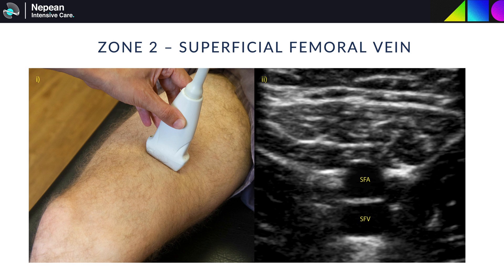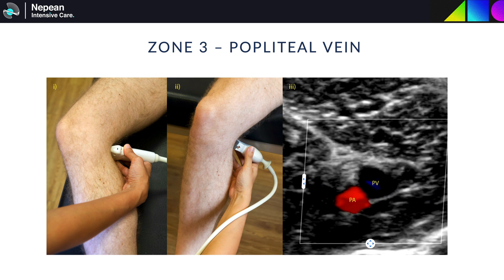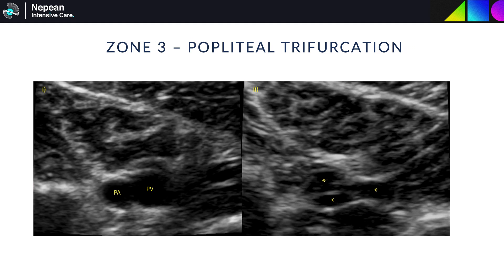Sliding the transducer down shows the bifurcation of the femoral vein. The superficial vein should then be followed into the adductor canal until it's no longer visible. In the adductor canal, the femur does not underlie the vessels, so the non-scanning hand may need to be held underneath the medial aspect of the thigh to allow compression. Lastly, the popliteal vein should be seen superficially to the popliteal artery in the popliteal fossa, followed upwards until no longer seen and downwards until the popliteal trifurcation.